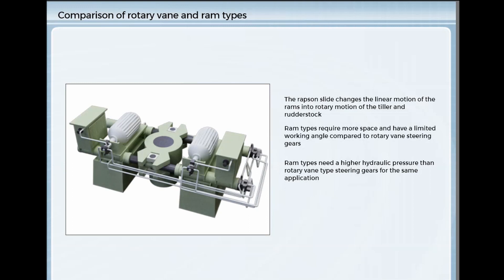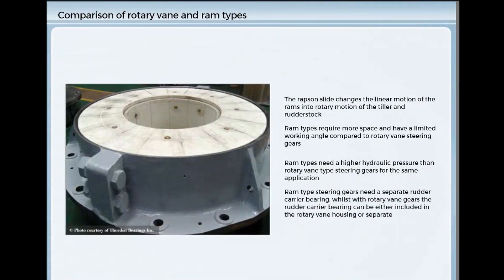Ram type steering gears generally need a higher hydraulic pressure than rotary vane type steering gears for the same application. Because they are connected to the rudder stock through a moving linkage, ram type steering gears need a separate rudder carrier bearing, whilst with rotary vane gears the rudder carrier bearing can be either included in the rotary vane housing or separate.